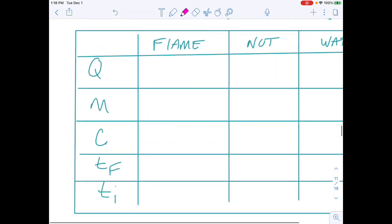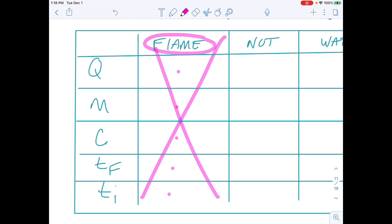So here's our data table. Let's look at our information for our flame. Don't have a mass of a flame, don't have a specific heat of a flame, don't have a final temperature of a flame, and don't have initial temperature of flame. So flame is no help to us at all.